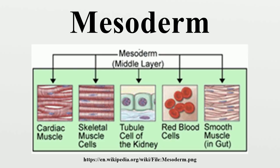During the third week, the paraxial mesoderm is organized into segments. If they appear in the cephalic region and grow in a cephalocaudal direction, they are called somitomeres. If they appear in the cephalic region and establish contact with the neural plate, they are known as neuromeres, which later form the mesenchyma in the head. The somitomeres organize into somites, which grow in pairs. In the fourth week, the somites lose their organization and cover the notochord and spinal cord to form the backbone.